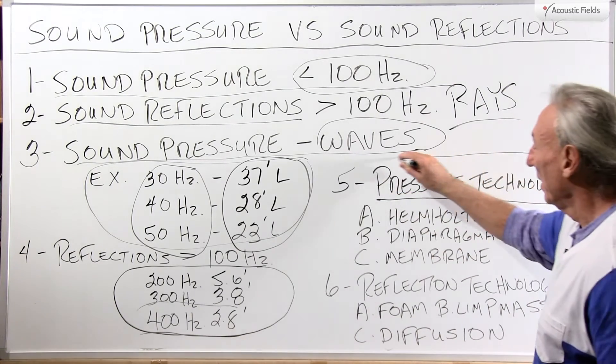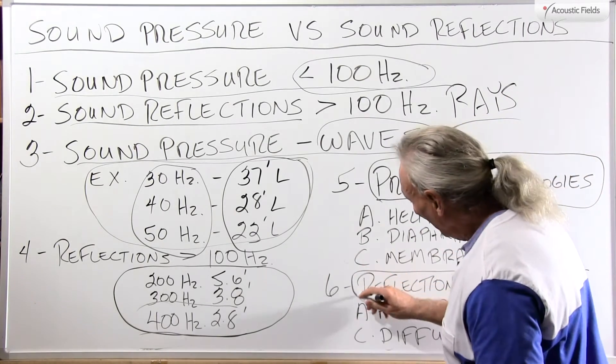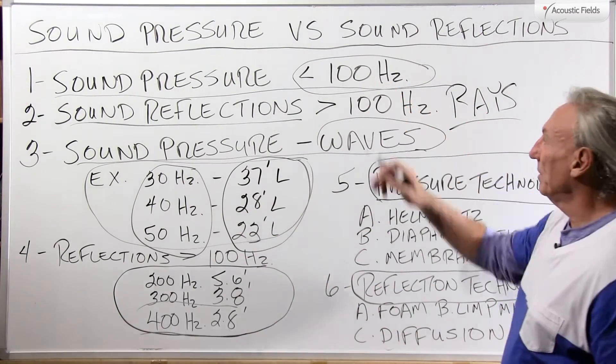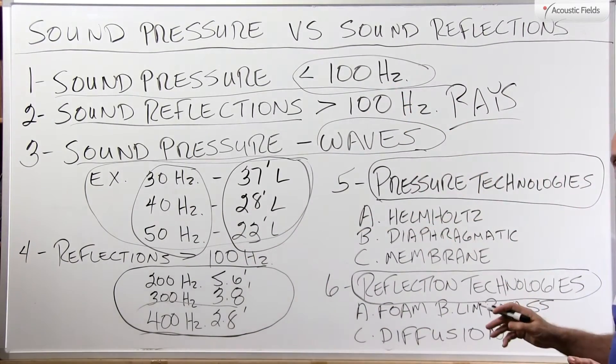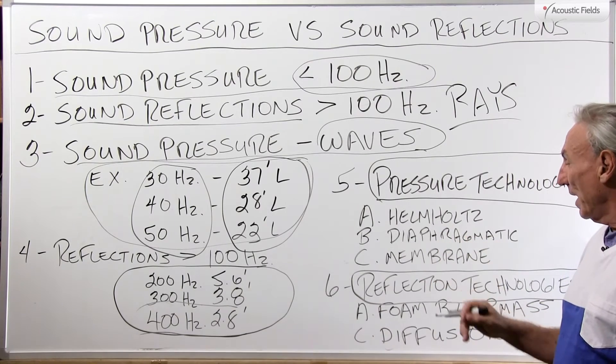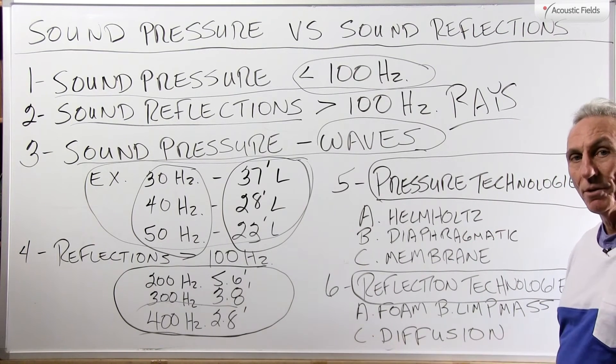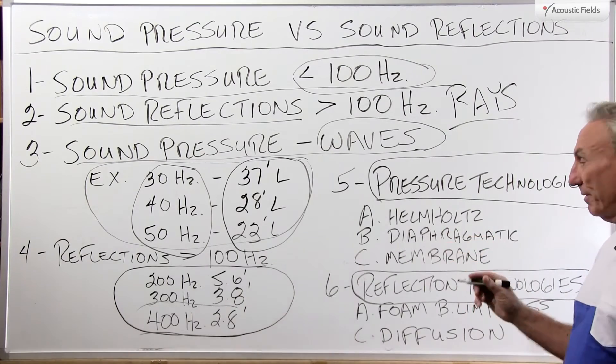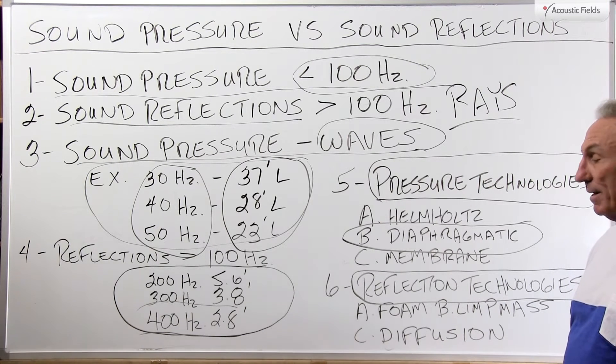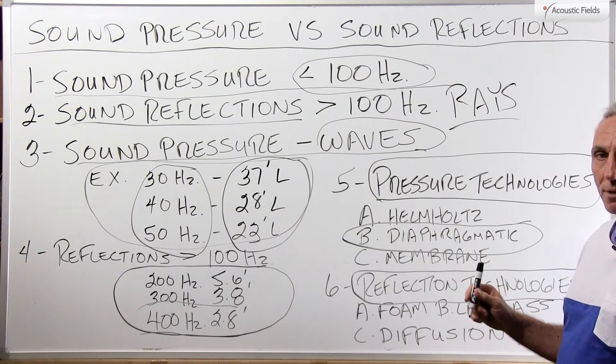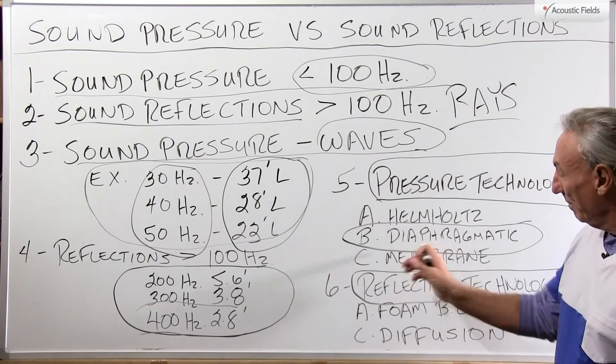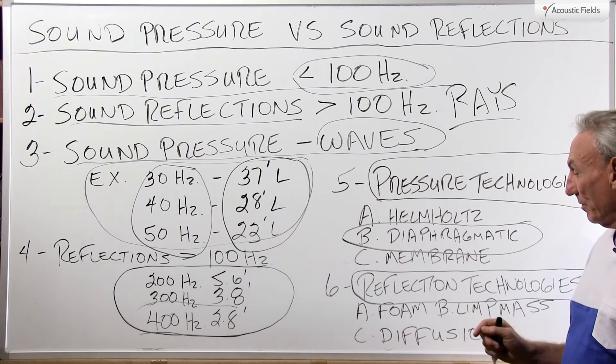Pressure technology - and here's where the confusion lies in the treatment. I think people kind of understand the definition but it's the treatment. Any energy below 100 cycles, pressure activated technology, needs to be treated with pressure activated devices. So Helmholtz, diaphragmatic, and membrane - we've done countless videos on those so we won't go into them. But these are pressure activated devices. This is the one we favor because it's the most powerful, though it's also one of the most difficult to get right. Helmholtz we all know is more frequency specific, and I'll do a video on that. Membrane is a cousin to diaphragmatic and we can talk about that later.